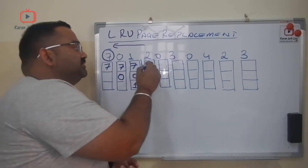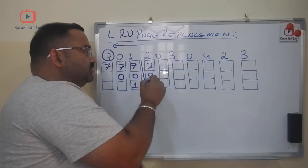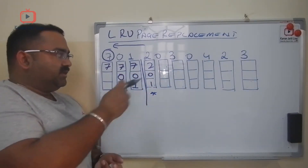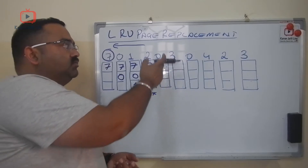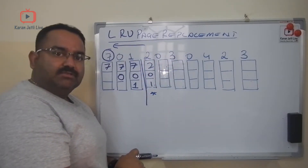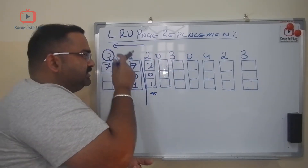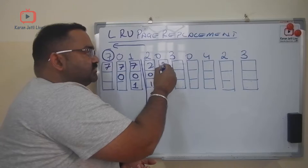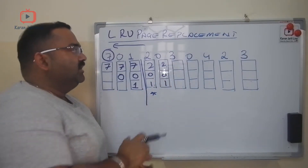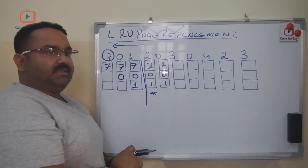Since page 7 is the least recently used, I will replace page 7 with the new page 2. So the cache now contains: 2, 0, 1. Then we need page 0 — zero is already in the cache, so no replacement needed.